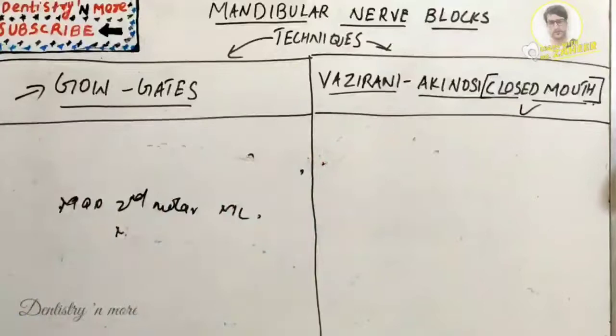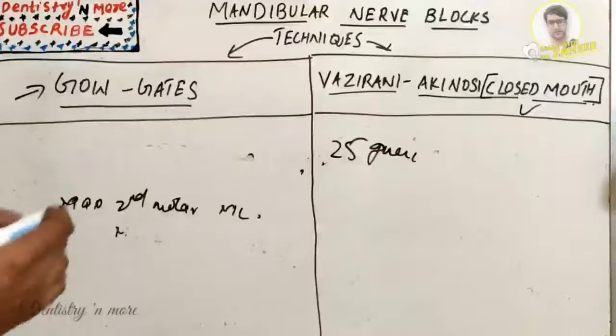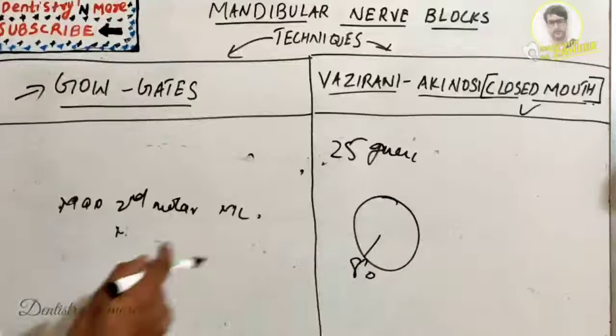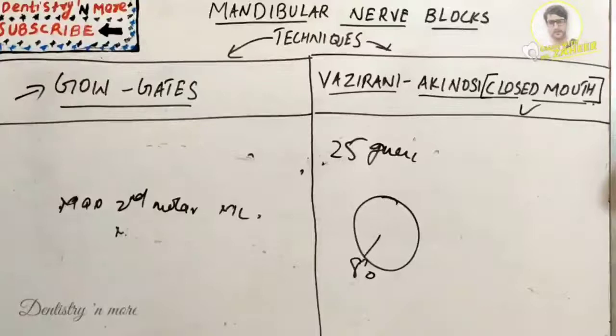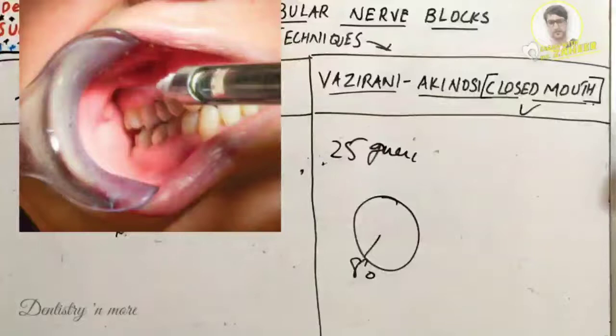For the Akinosi technique, a 25 gauge needle is preferred. The patient is in supine or semi-supine position; a right-handed person sits at the 8 o'clock position facing the patient. Landmarks include the mucogingival junction of the maxillary second or third molar and the maxillary tuberosity. The patient is asked to occlude gently on the posterior teeth, and the barrel of the syringe is held parallel to the maxillary occlusal plane.